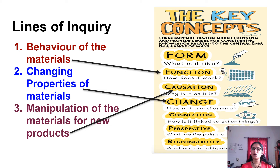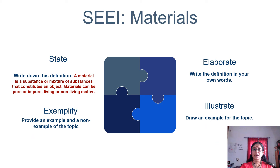I'm not revealing everything now, but I can assure you this unit is going to be very interesting. The key concepts leading our inquiry are: function — for the behavior of materials, how it behaves; change — for how materials change from one property to another; and causation — what causes it to change.